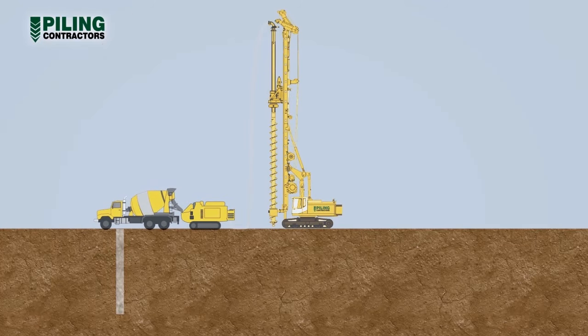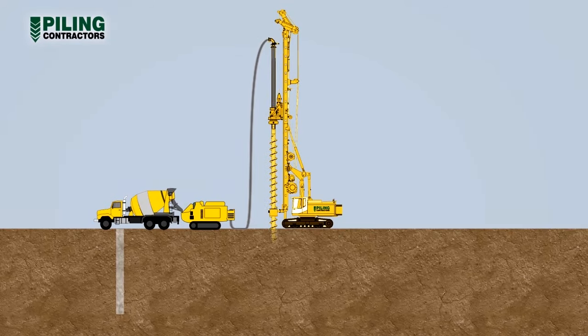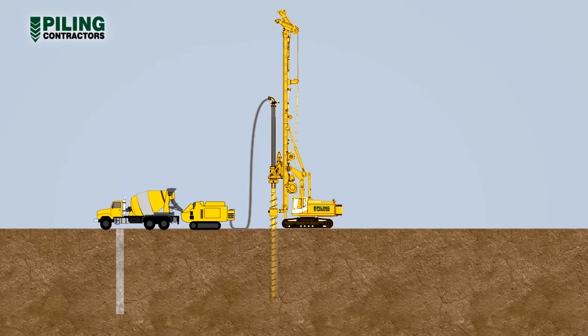The auger has a hollow stem which is connected by a flexible hose to a concrete pump. The hose and stem are charged with concrete before drilling commences.